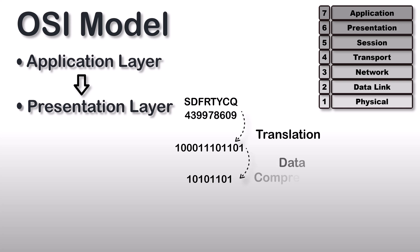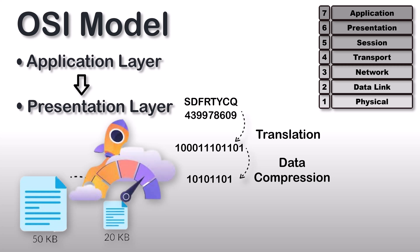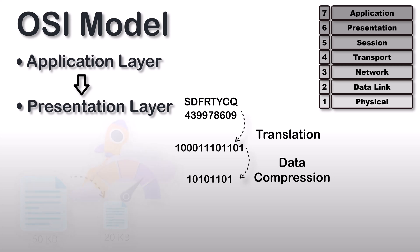Also, before sending this data, the presentation layer reduces the number of bits from the original data. This bit reduction process is called data compression. Data compression basically reduces the amount of space or size used to store the original data, and when data size is reduced, it makes data transmission faster.